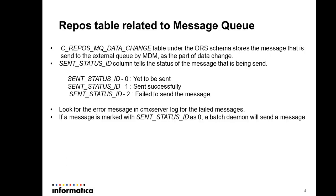If the status is 0, it means it is still yet to be delivered. If it is 1, it means it has been successfully delivered. If it is 2, it means it has failed to deliver, which means you need to look into the server logs for more details on why it failed.